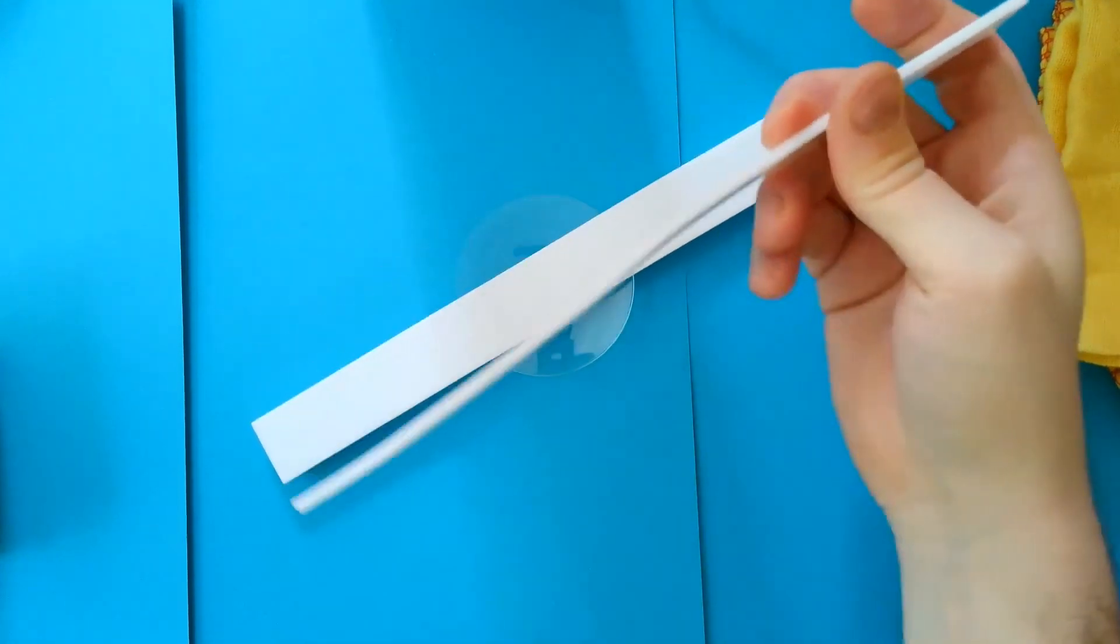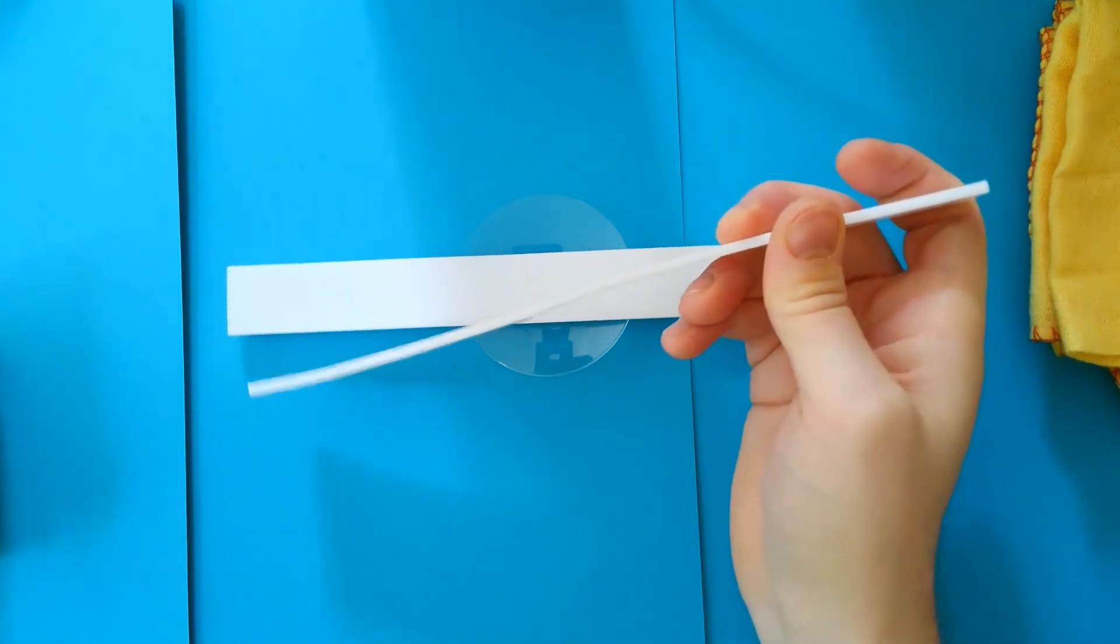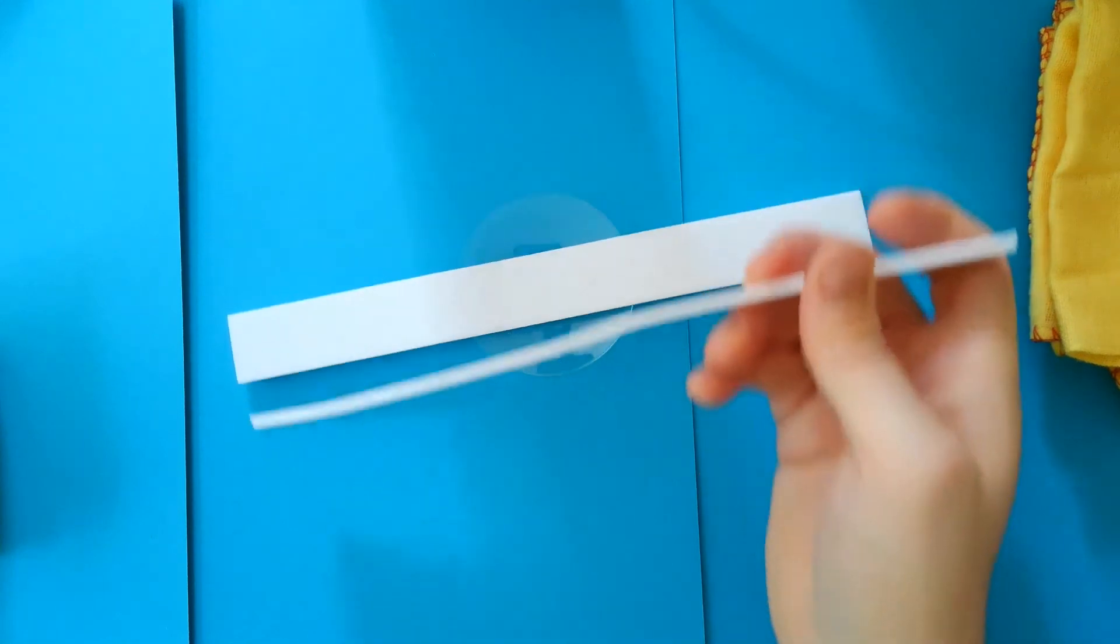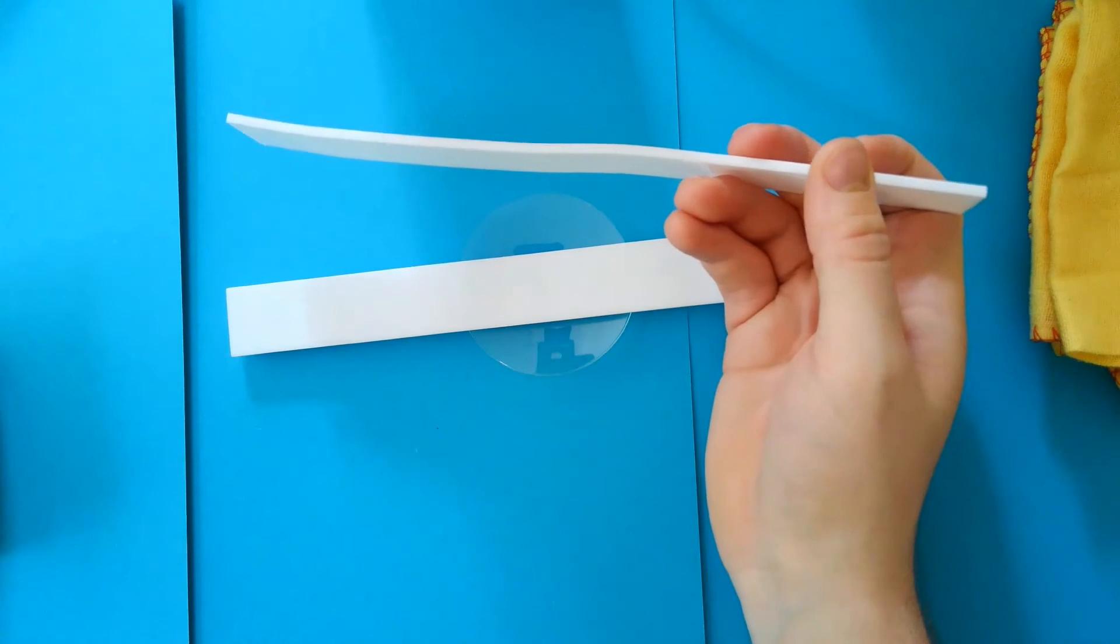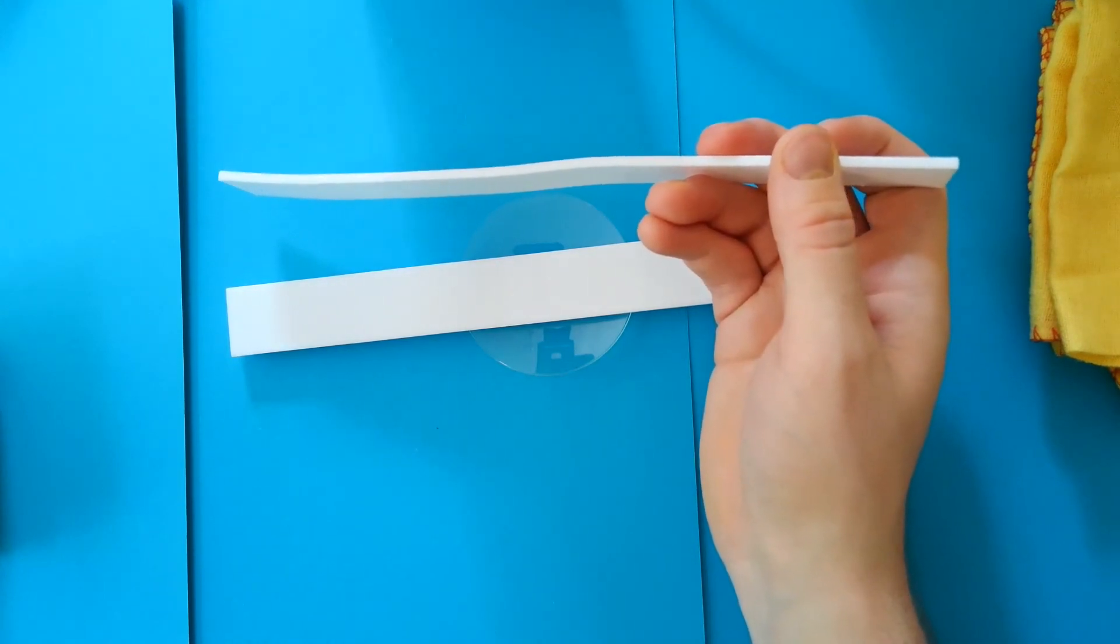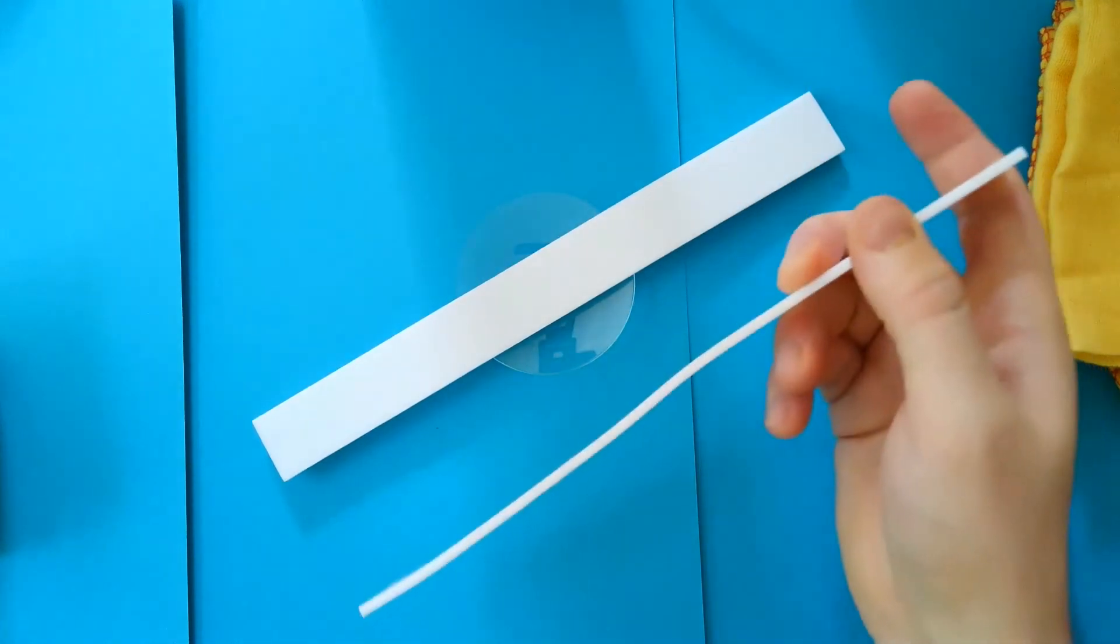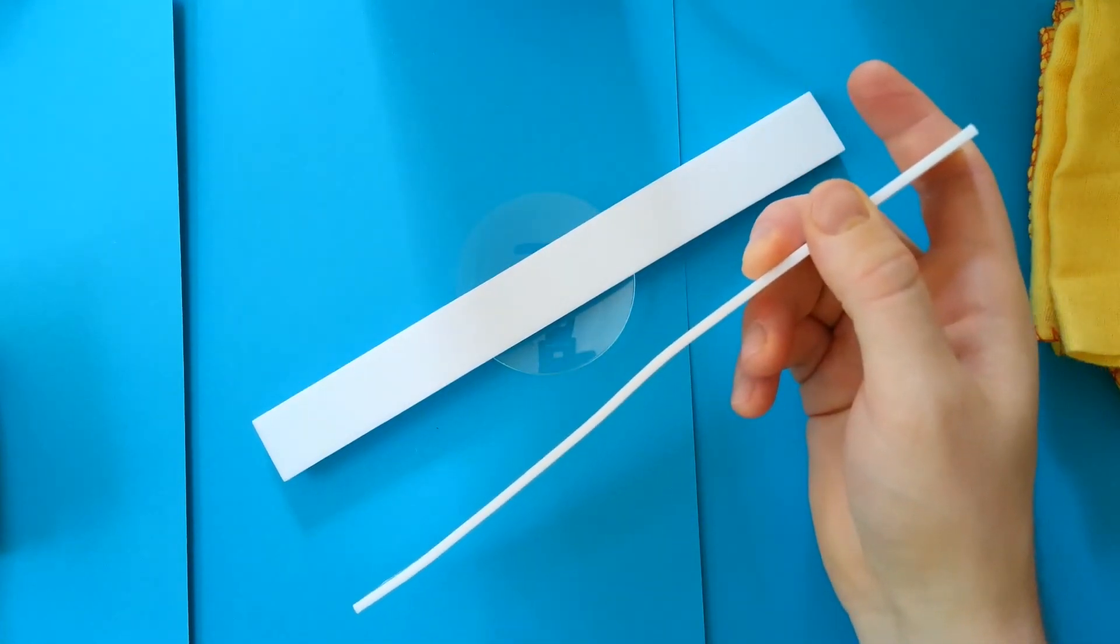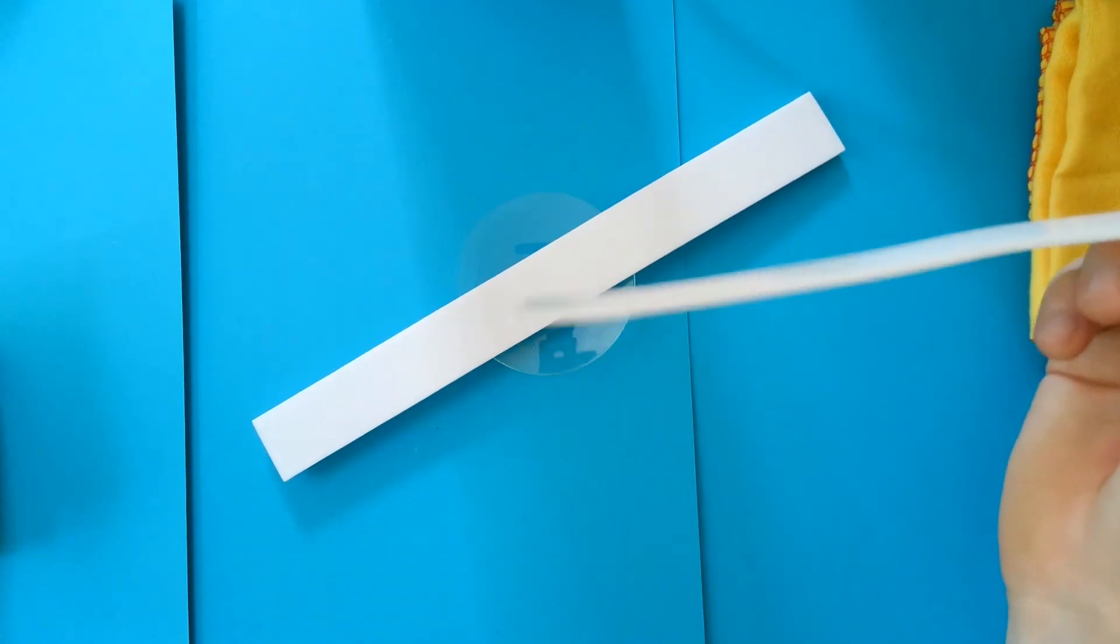There we go. So you can draw conclusions about similar charges repelling. Again, the closeness of the rods tells you how big the force is. So the closer I am, the bigger the force. Whereas if I hold it out here, there is a force, but it's not big enough to make it move due to friction between the watch glass and the table.